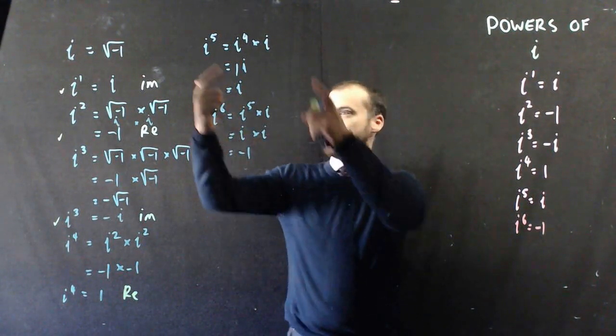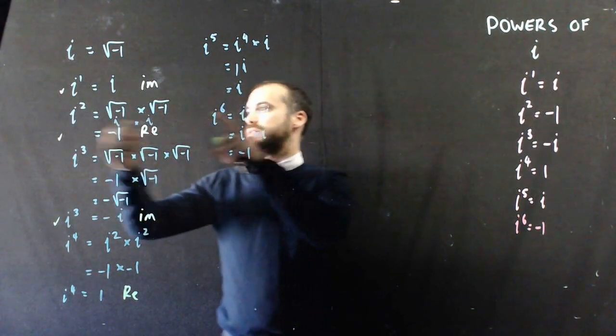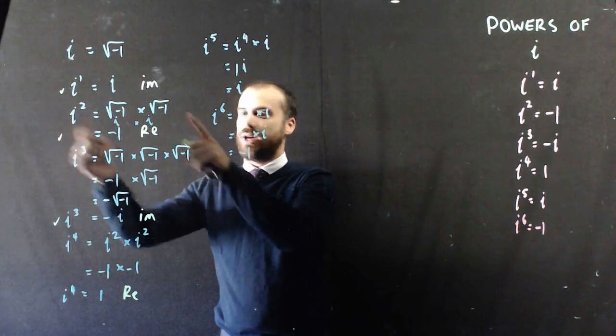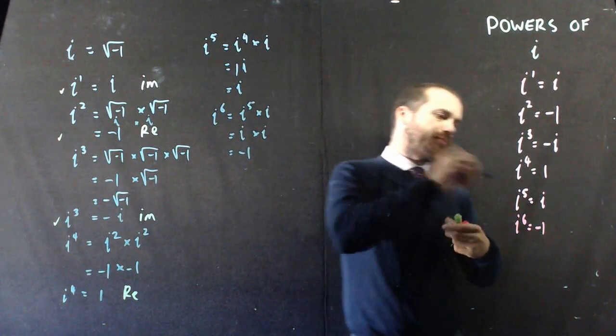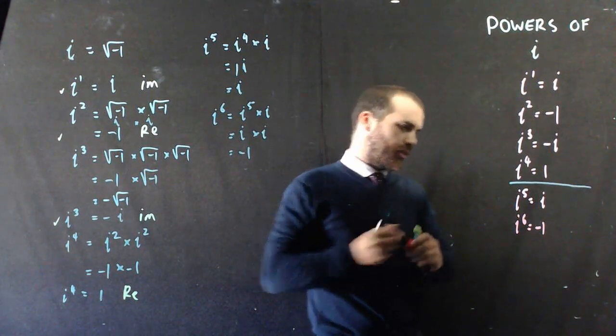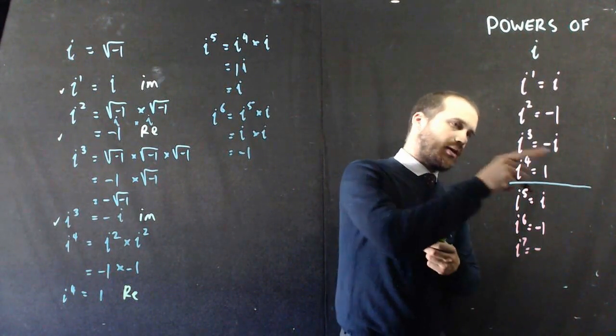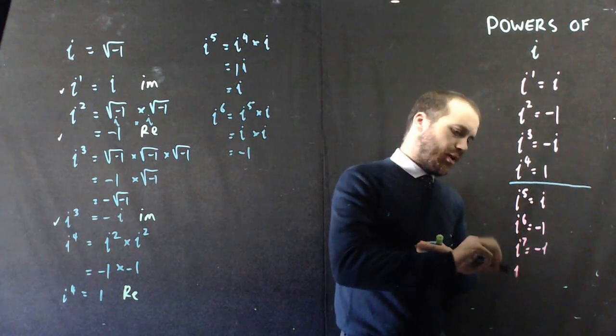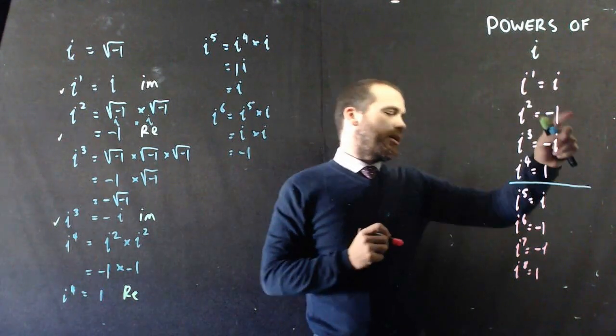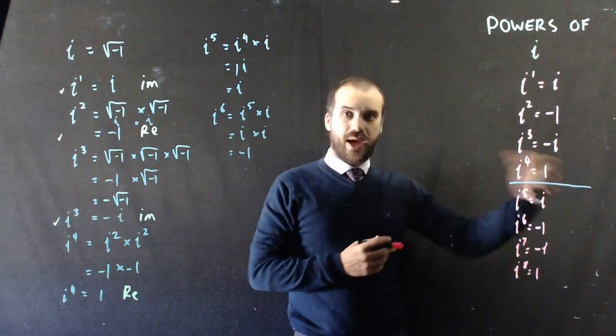All right. Now, if you are spotting this, this is corresponding with that. This is corresponding with that. Sorry, that's corresponding with that. That's corresponding with that. We're starting to get a bit of a pattern forming. Every 4th term. So, i to the 7 is going to correspond with i to the 3. Negative i. i to the 8 is going to correspond with this, which is 1. i, negative 1, negative i, 1. i, negative 1, negative i, 1. Those are powers of i.